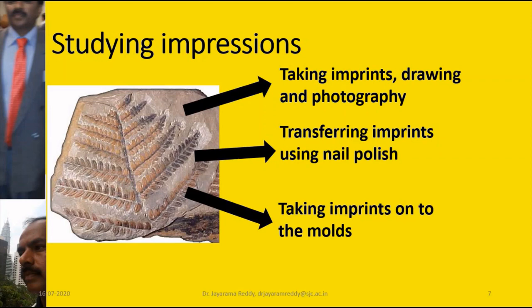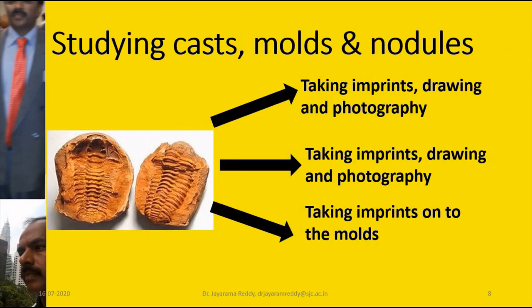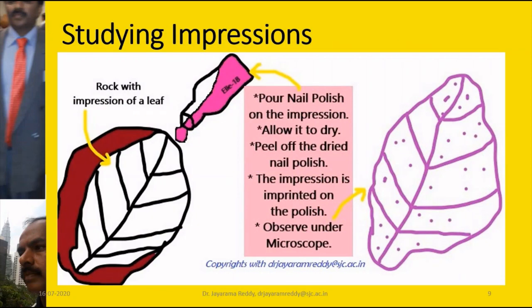You can see the impressions of a fern in a rock. The imprints can be transferred onto another sheet by using photography, drawings, and imprinting. The same applies to casts, molds, and nodules — imprints are transferred like fingerprints of a plant that existed in the past. These fingerprints are transferred onto another form for studying, but only external features are possible here.